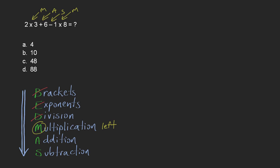So let's do that: 2 times 3 plus 6 minus 1 times 8. So I've got multiplication here and multiplication here, so I'm going to do from left to right. So 2 times 3 comes first, so that's 6.